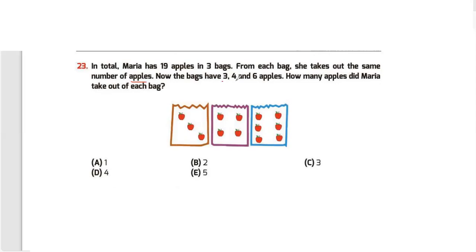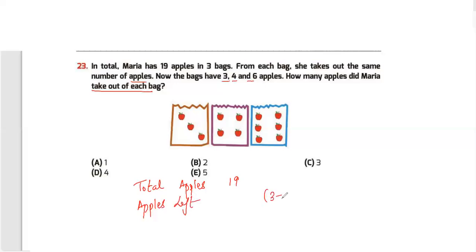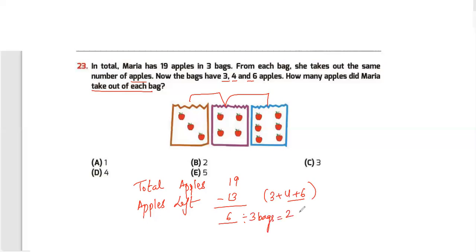Question 23: Maria has 19 apples total in three bags. She takes out the same number of apples from each bag. Now the bags have 3, 4, and 6 apples. How many apples did Maria take out of each bag? Total apples remaining: 6 plus 4 is 10, plus 3 is 13. So apples taken out total: 19 minus 13 equals 6. Divided across three bags: 6 divided by 3 equals 2. My answer is option B — two apples taken from each bag.